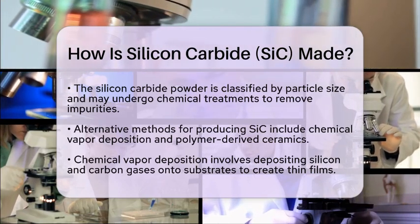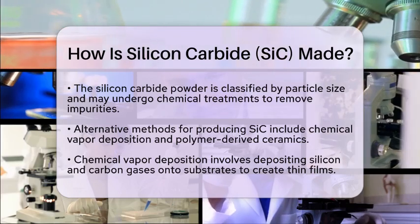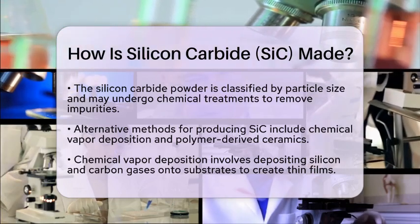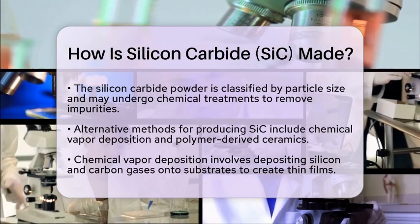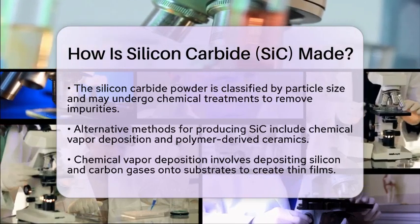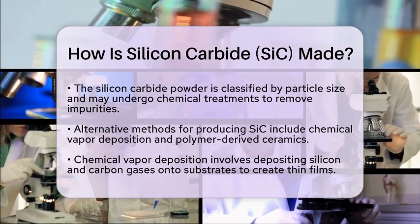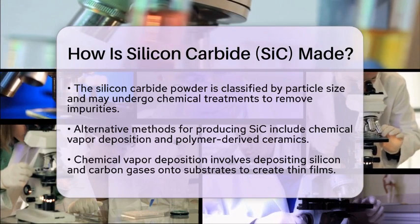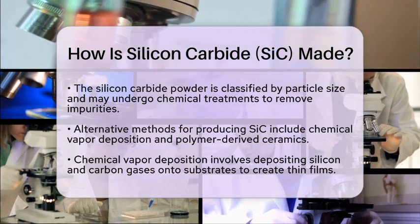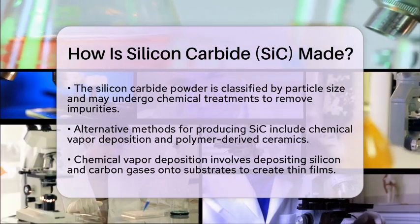Another method is polymer-derived ceramics. In this approach, preceramic polymers that contain silicon and carbon are shaped and then heated in an inert atmosphere to convert them into silicon carbide ceramics. This method allows for the creation of complex shapes and fine microstructures.